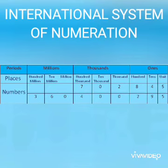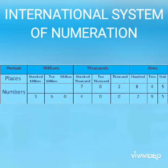In the Indian system, we have three places in one period, but in other periods we have two places. But in the international system, we have three places in every period. In the ones period, we have the unit, tens, and hundreds places.